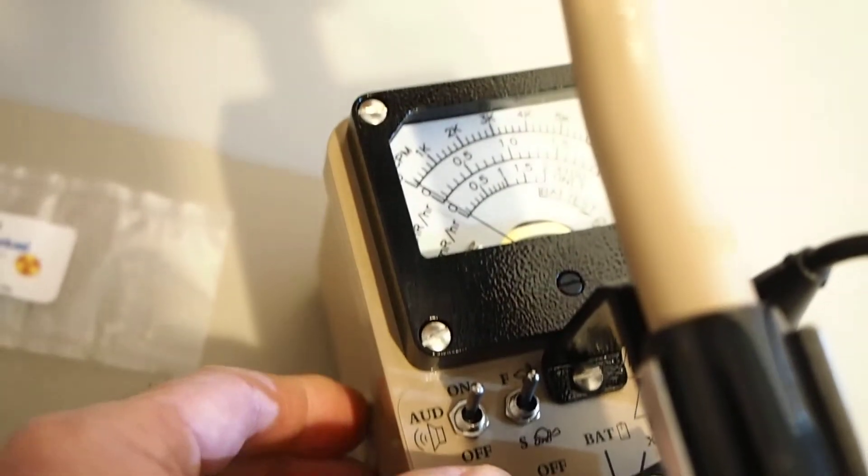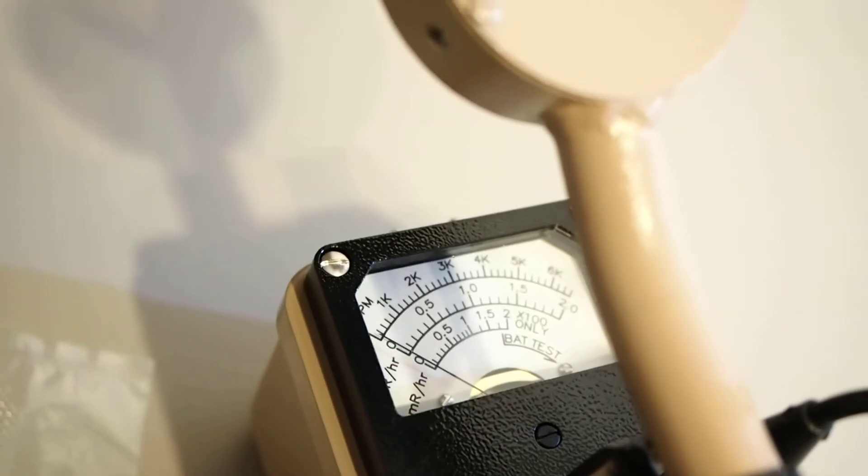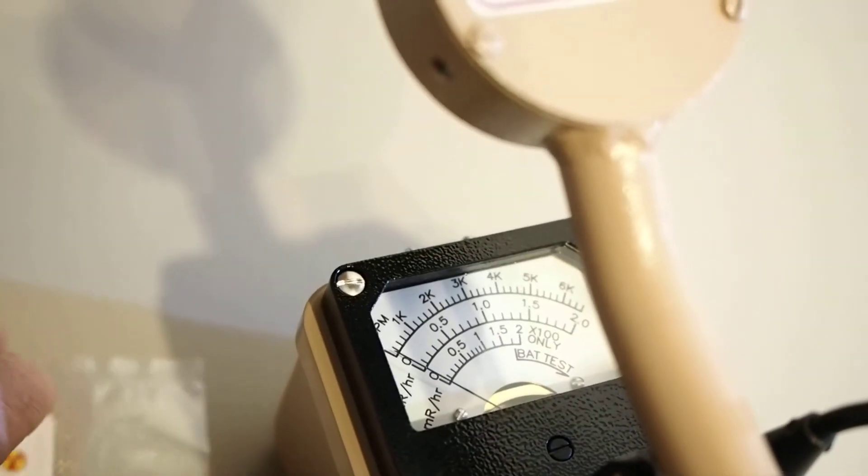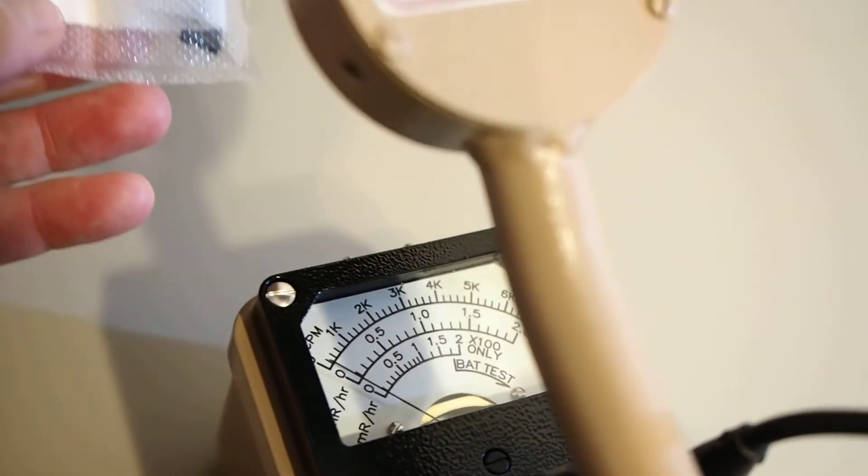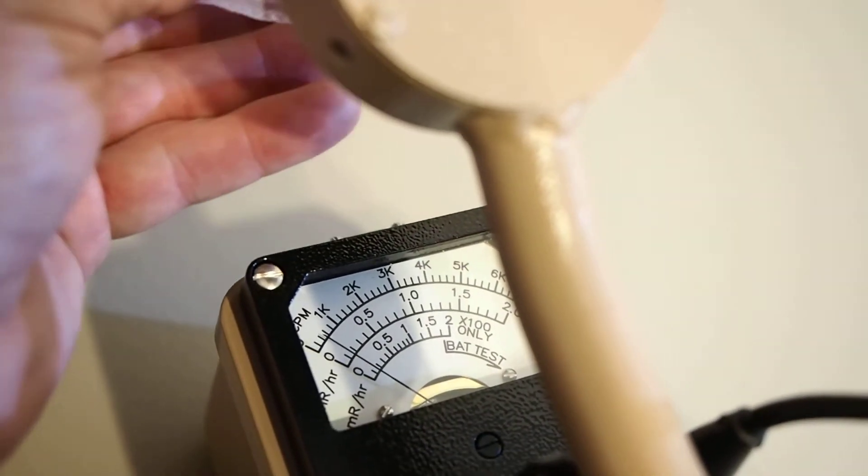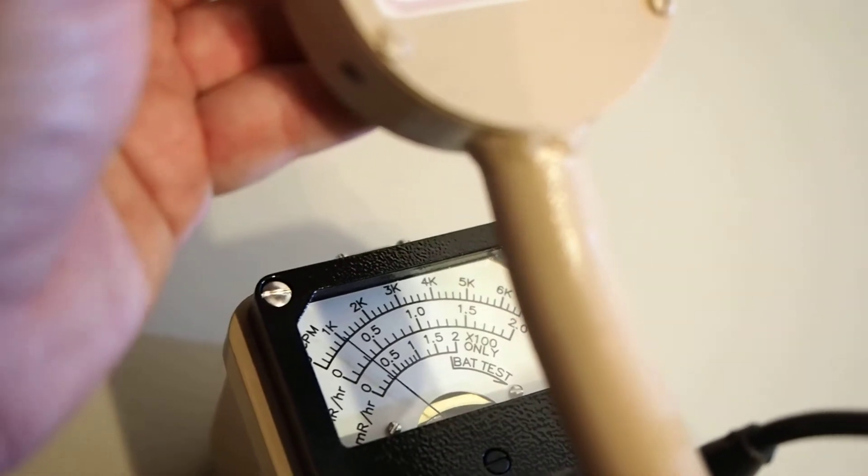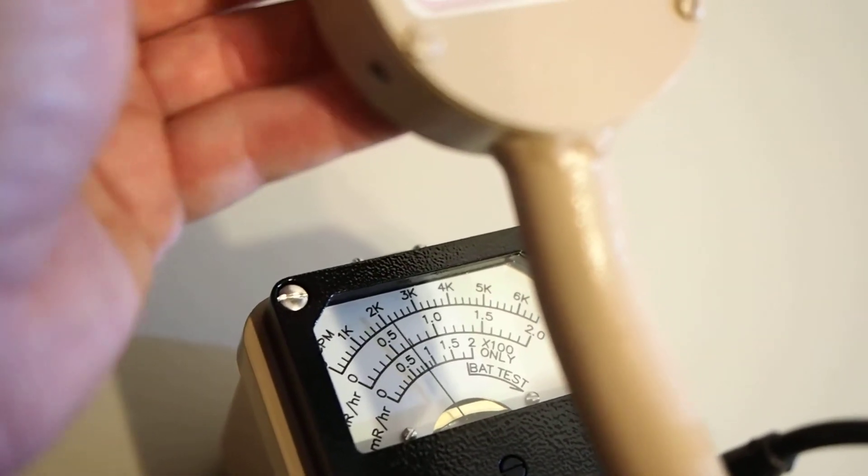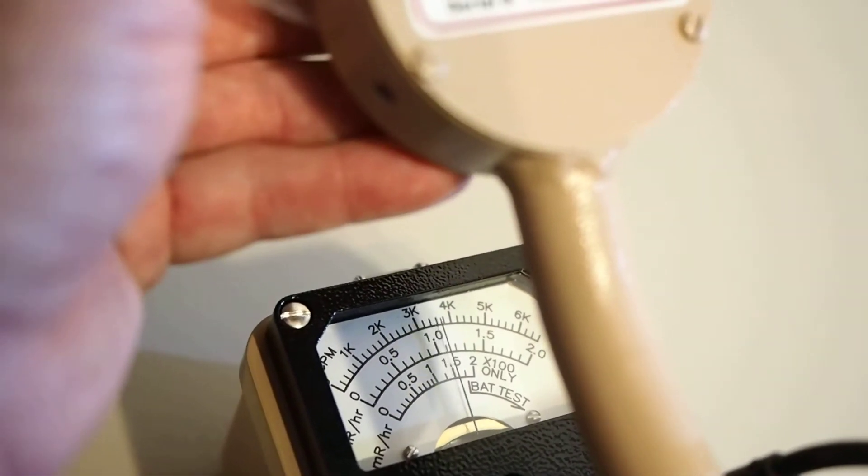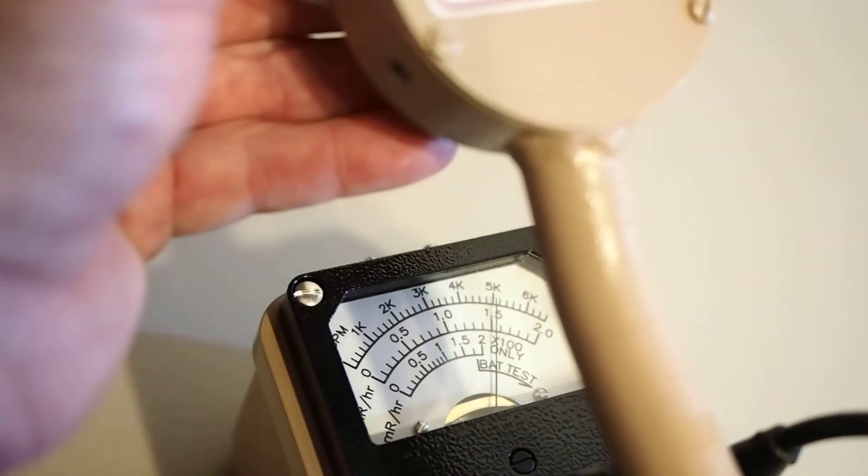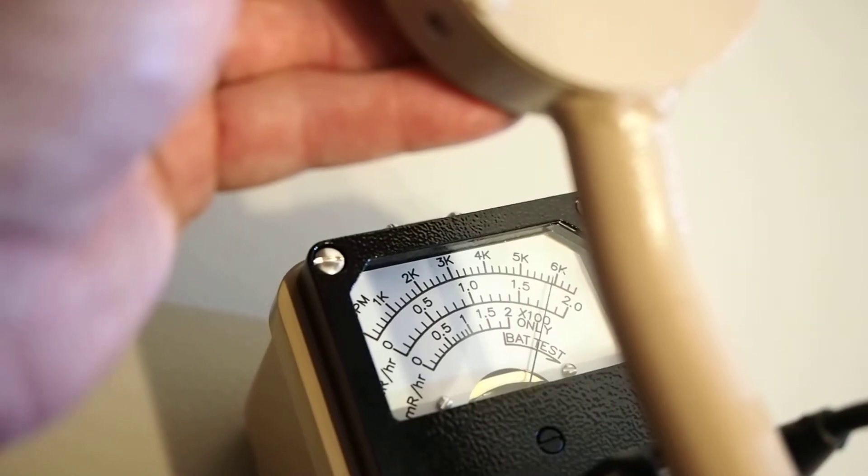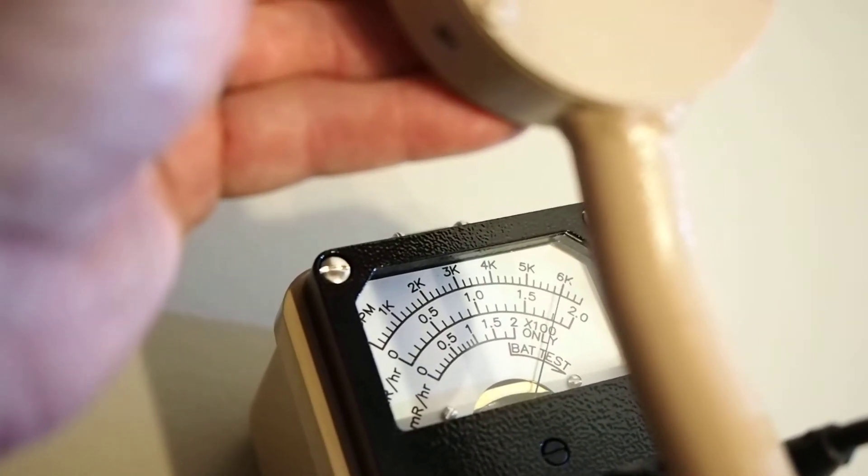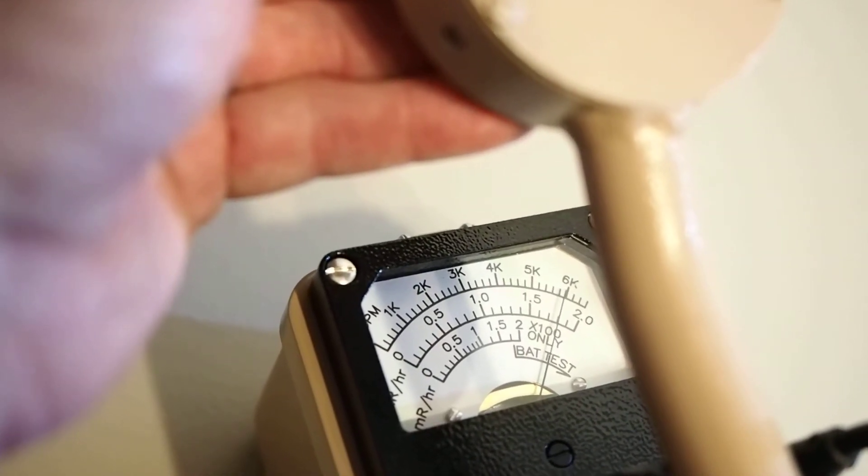Let's go ahead and reset. See our scale there. And picking up the U-238 and moving it close to the pancake, you can see the amount of radiation is increasing steadily. And we're actually peaking right at 60,000 counts per minute.